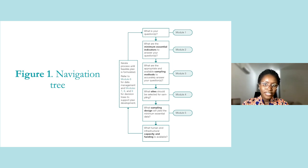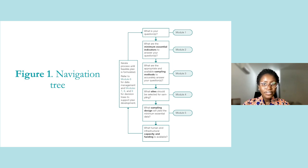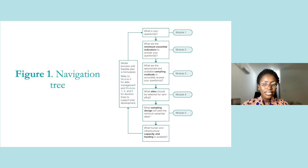Module 6 offers guidance on managing entomological data both in the field and laboratory. Finally, Modules 7, 8, and 9 include a series of decision trees that guide you through developing your data collection plan and interpreting data. When you first start working with the ESPT, I strongly recommend working through modules one through nine in the order presented by the navigation tree. However, as you become more familiar with the ESPT, you may not need to follow this exact order every time, especially as you iterate existing surveillance plans to adapt to new and emerging priority questions over time.